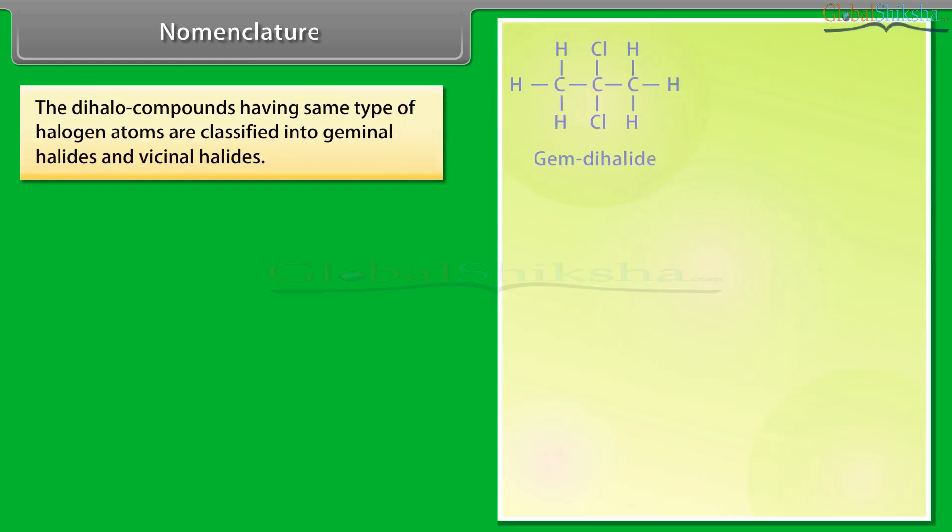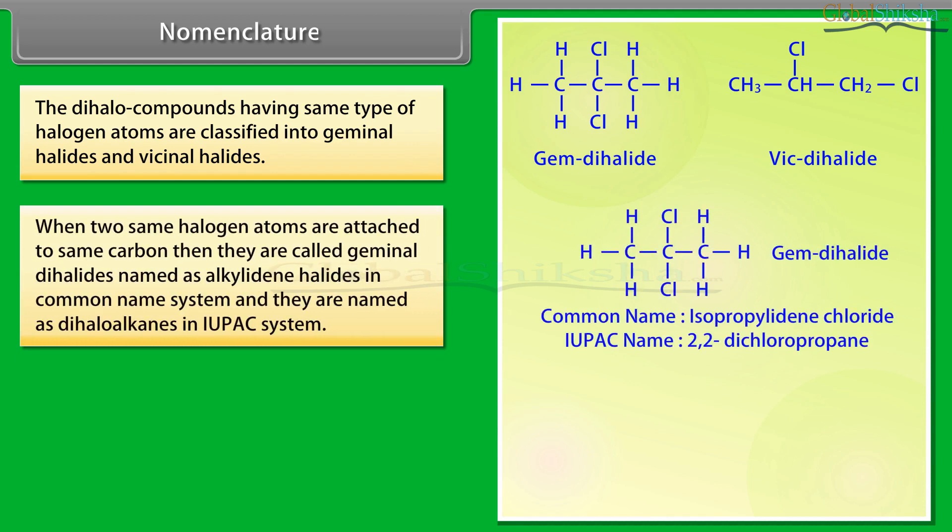The dihalo compounds, having the same type of halogen atoms, are classified into geminal halides and vicinal halides. When two same halogen atoms are attached to the same carbon, then they are called geminal dihalides, named as alkylidene halides in common name system, and they are named as dihaloalkanes in IUPAC system.